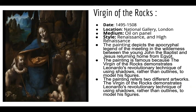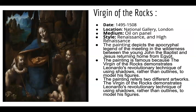The fourth painting I chose was the Virgin of the Rocks. It was made from 1495 to 1508. The location was the National Gallery in London. The medium was oil on panel. The style was Renaissance and High Renaissance. The painting depicts the apocryphal legend of the meeting in the wilderness between the young John the Baptist and Jesus returning home from Egypt. The painting is famous because the Virgin of the Rocks demonstrates Leonardo's revolutionary technique of using shadows rather than outlines to model his figures.